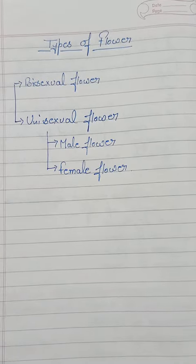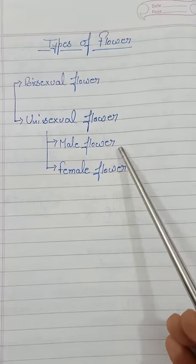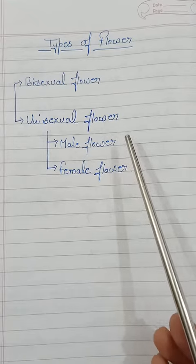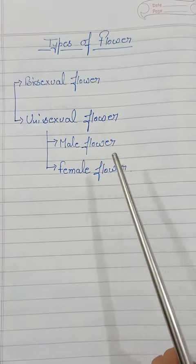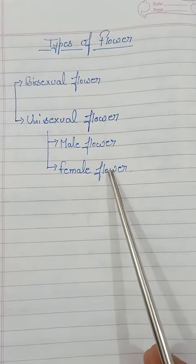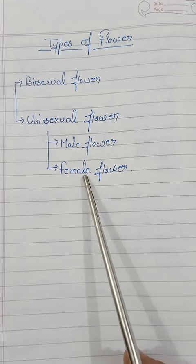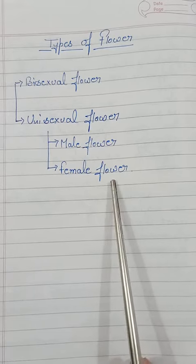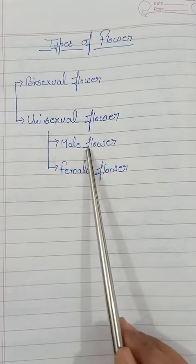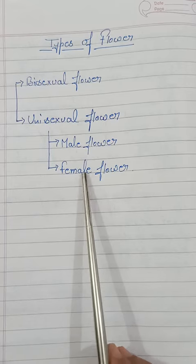On the basis of unisexual flower, a flower could be a male flower or a female flower. A flower which contains only stamen is known as a male flower, and a flower which contains only carpels is known as a female flower. It will contain only carpels along with other parts of the flower like calyx and corolla, and will not contain any female reproductive part.